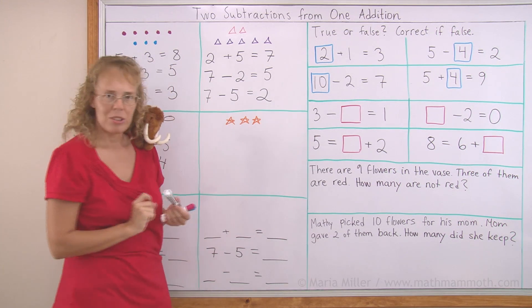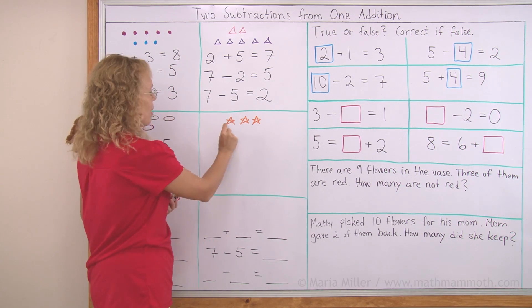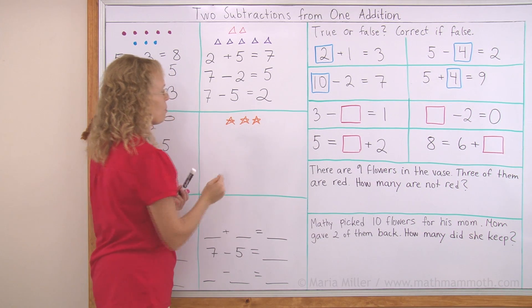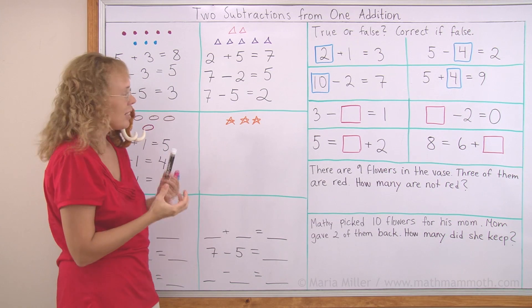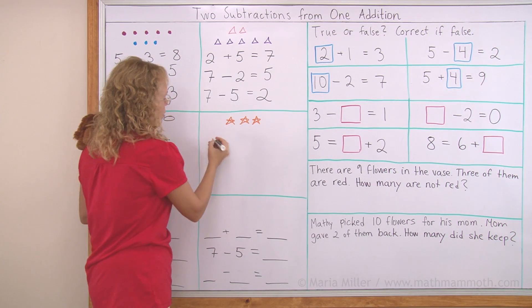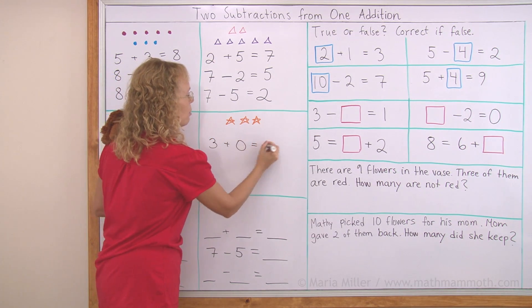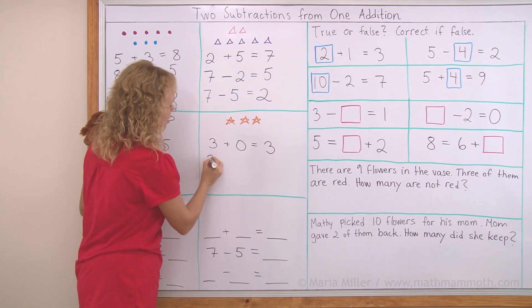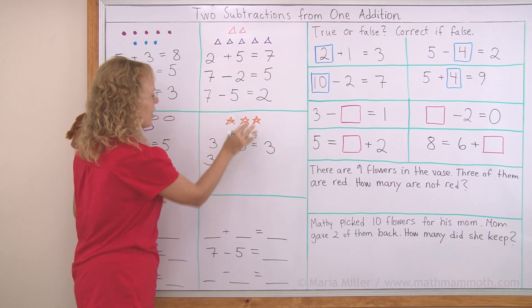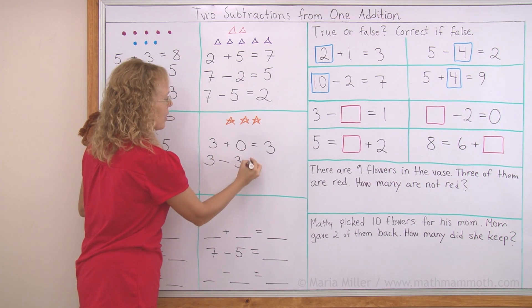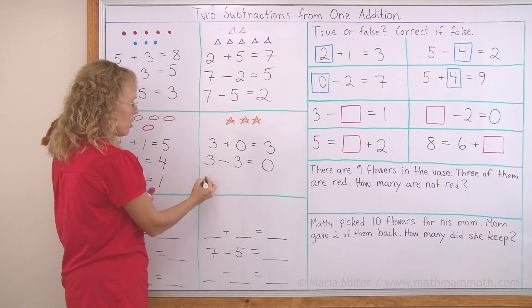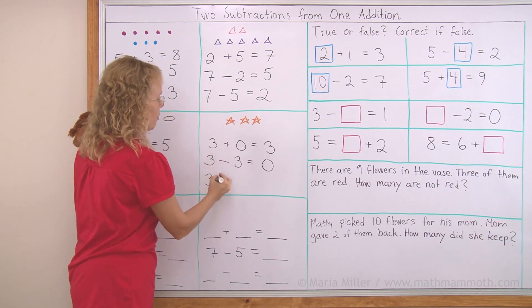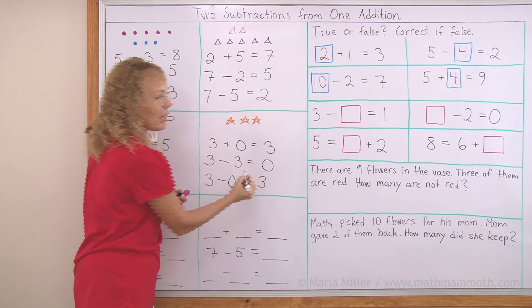Now over here this looks a little confusing maybe, but you have to imagine here like being three here and zero here, like another group of zero items, zero stars. So my addition would be three plus zero equals three. And then the two subtractions: we start with three in the beginning and let's say those three go away, then none left. Or if there's three in the beginning and then the zero go away, none go away, three will be left.